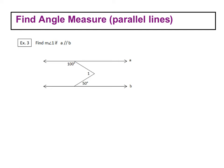All right, so this example is a little bit less straightforward than the last one, but we'll talk through it. We have find the measure of angle 1 if A is parallel to B.